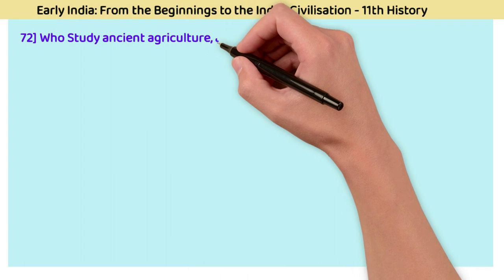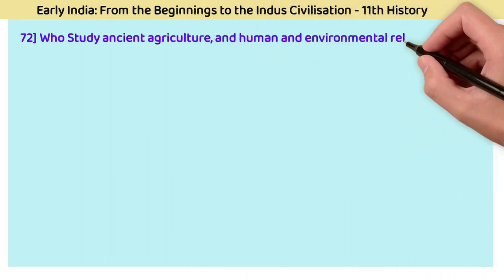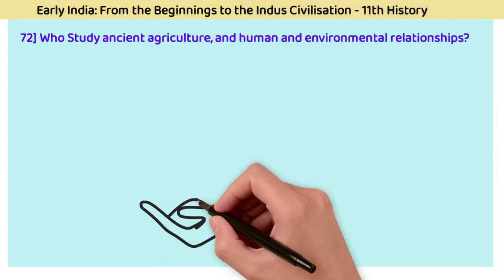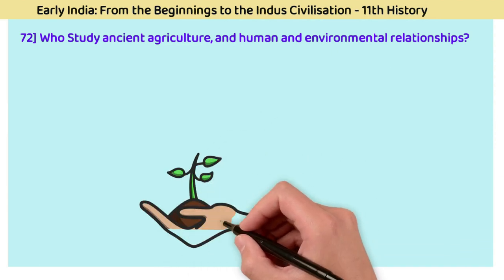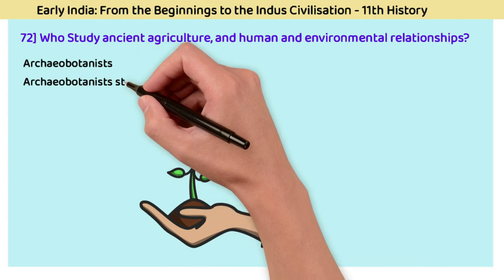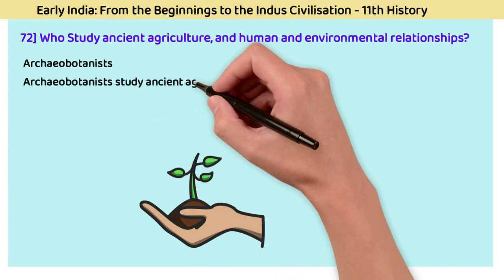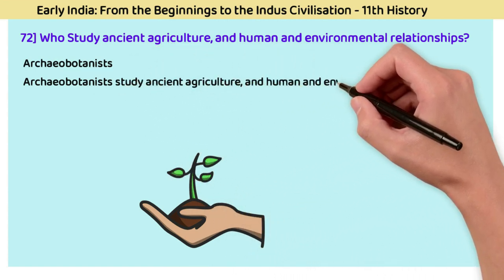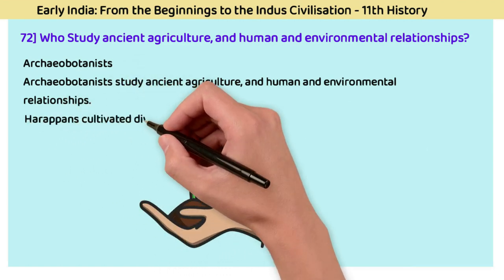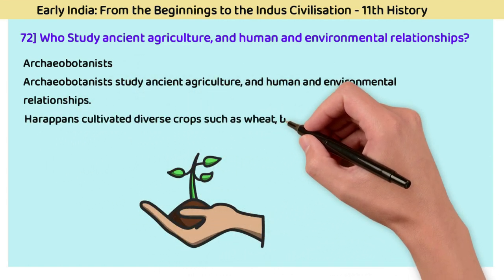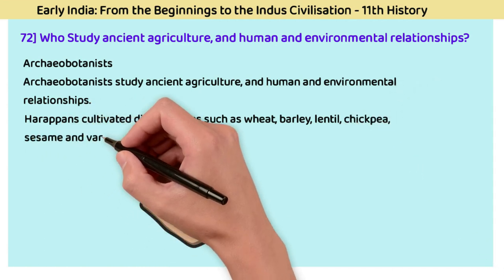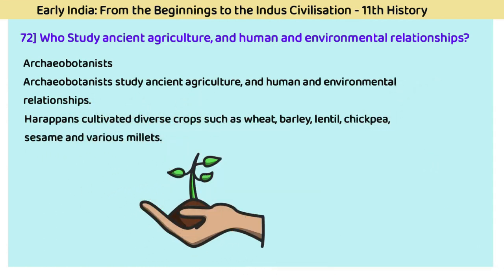Question 72: Who studies ancient agriculture and human-environmental relationships? The answer is archaeobotanists. Archaeobotanists study ancient agriculture and human-environmental relationships. Harappan people cultivated diverse crops such as wheat, barley, lentil, chickpeas, sesame, and various millets.